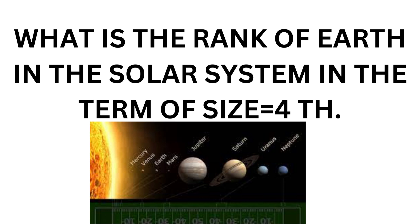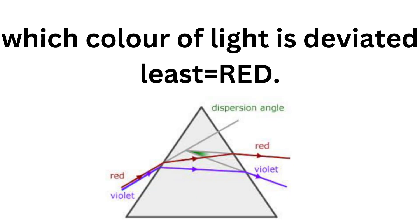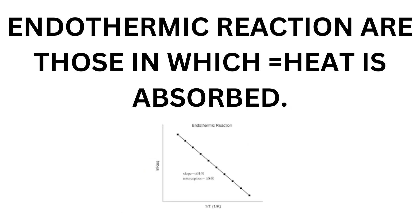What is the rank of earth in the solar system in terms of size? The order is: Mercury, Venus, Earth, Mars, Jupiter, Saturn, Uranus, and Neptune — these are all included in the solar system. The Fisher unit is used to measure particle size. Red color is deviated least in the spectrum. Endothermic reactions are those in which heat is absorbed, while in exothermic reactions heat is not absorbed but evolved or released.